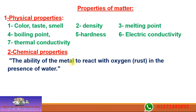We also have chemical properties — الخصائص الكيميائية. The definition: the ability of a metal to react with oxygen and rust in the presence of water. Like iron — after a while you find it rusted. A wire left out becomes rusty because oxygen and water got to it. We will take one example for chemical properties and seven for physical properties.